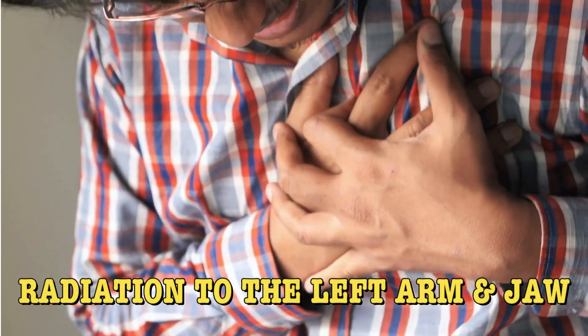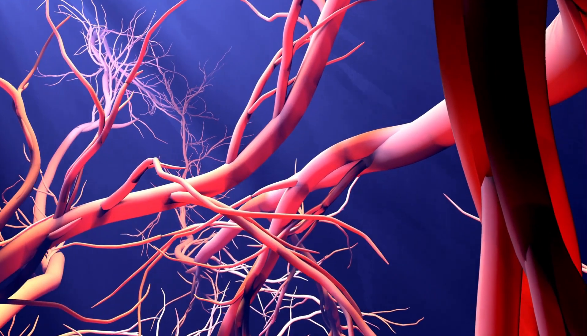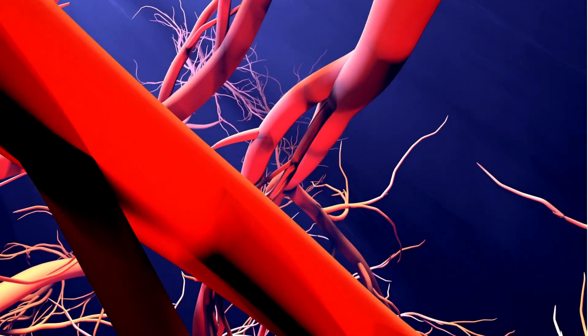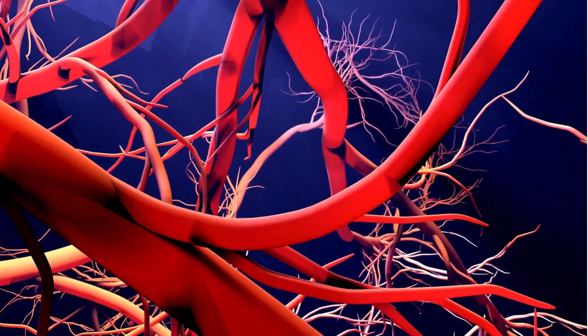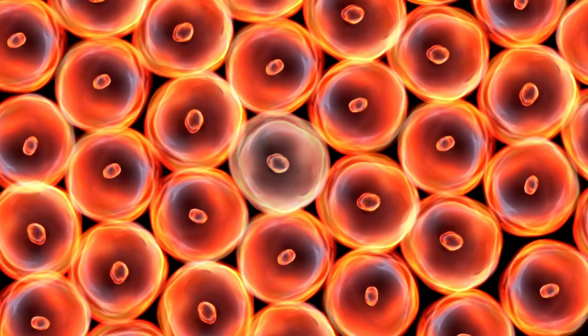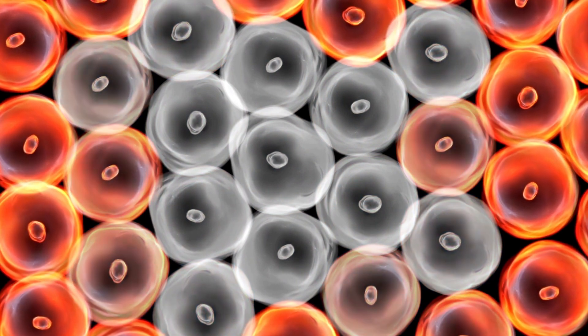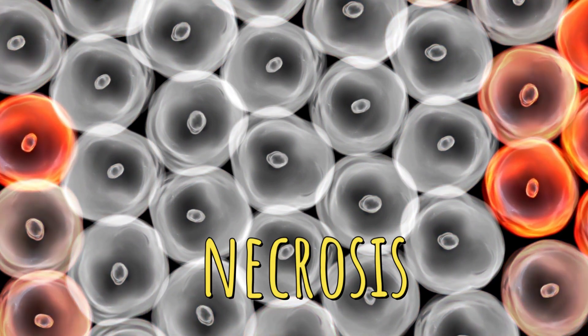Number six: cellular damage and necrosis. If blood flow is not restored promptly, the heart muscle cells begin to suffer irreversible damage due to the lack of oxygen. This can eventually lead to cell death in a process called necrosis.